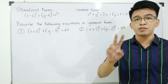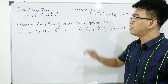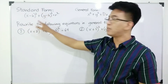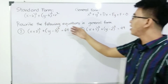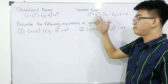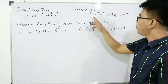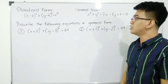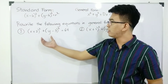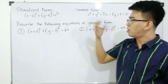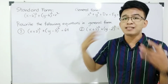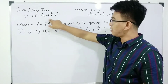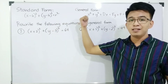We have here the two different forms of the equation of the circle. The first one is the standard form, in which we have (x minus h)² plus (y minus k)² is equal to r². And this is the general form of the equation of the circle: x² plus y² plus Dx plus Ey plus F is equal to zero. Our target right now is to transform these equations from standard form to their corresponding general form.